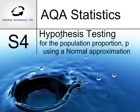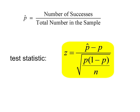Hypothesis testing for the population proportion using a normal approximation to the binomial distribution. This formula gives the test statistic z, and then we can compare this value with the normal distribution and its probabilities. The p-hat is the number of successes divided by your sample size. This formula has to be memorized, it's not in the AQA formula book.